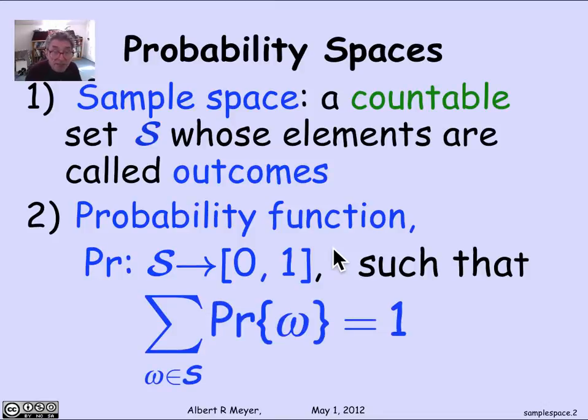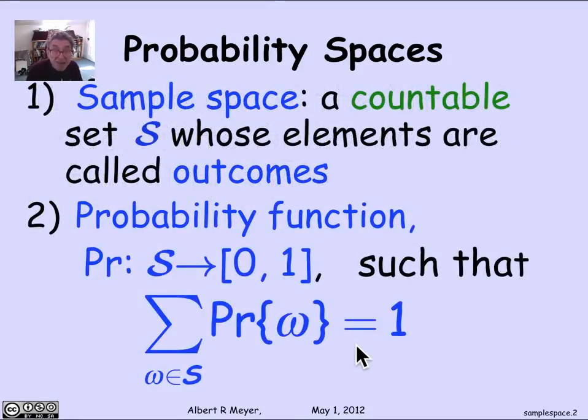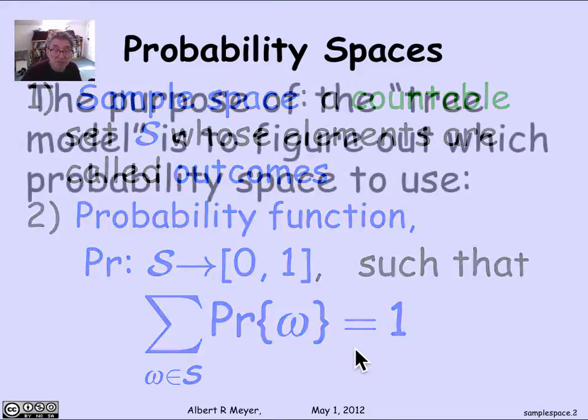The constraint on the probability function is that if I sum up the probabilities of all the outcomes—omega is an outcome in the sample space S, and I take the sum of all those probabilities of omega—they have to sum to 1. That's the crucial condition that defines a probability function on a sample space. The two together are called a probability space. A sample space with a probability function is a probability space.